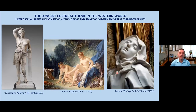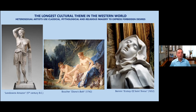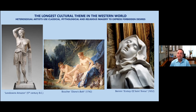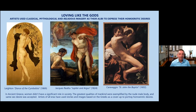Let's get into the core of our talk today, which I call the longest cultural theme in the Western world: artists using classical, mythological, and religious images to express forbidden desires. Here I have an example of each — a classical statue, a very erotic Amazon; a mythological image of Diana's back that allows Boucher to show female nudes; and this very famous statue by Bernini of the Ecstasy of Saint Teresa, which according to many experts reveals more sexual ecstasy than religious ecstasy. So these probably heterosexual artists use this device to show forbidden desires, and queer artists also use classical, mythological, and religious images to express their homoerotic desires.